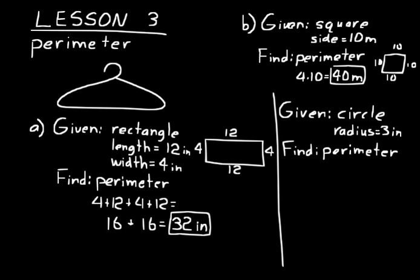This time we have a circle with a radius of 3 inches, and we want to find its perimeter — that's what circumference is. There's a math formula you must use: circumference equals 2 times pi times the radius. Pi is approximately 3.14 — it's a decimal that goes on to infinity, but 3.14 is a good estimate. So the perimeter or circumference of a circle equals 2 times pi times r.